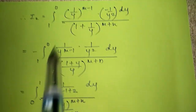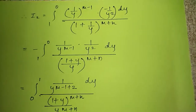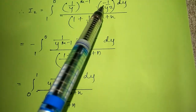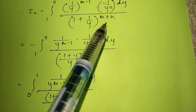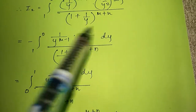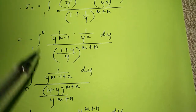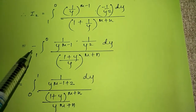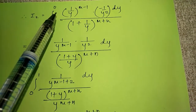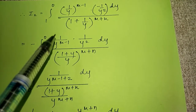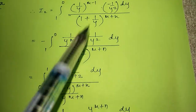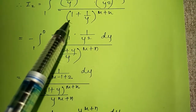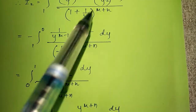So now I2 will be integral from 1 to 0: x raised to m minus 1 becomes 1 by y whole raised to m minus 1, and dx becomes minus 1 upon y squared dy. In the denominator we have 1 plus x bracket raised to m plus n, which becomes 1 plus 1 upon y bracket raised to m plus n. Simplifying, the denominator becomes y plus 1 upon y bracket raised to m plus n.